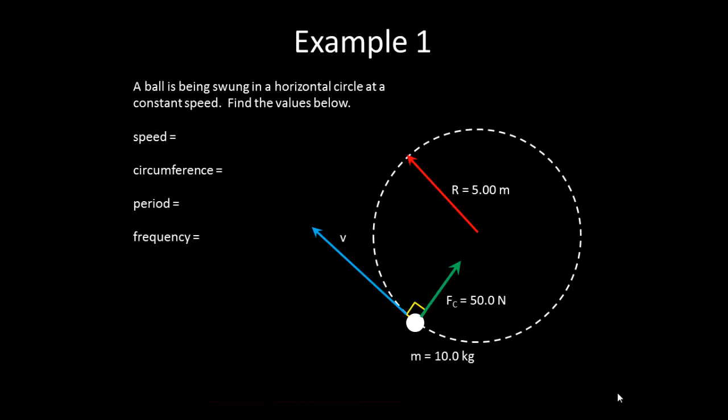I will now do two example problems. The first is a simple situation where a ball is being swung in a horizontal circle at a constant speed. Find the values below. Let's begin by finding the speed. This net force is going to be equal to mv² over r. We know that the centripetal force, whatever it's being caused by, is equal to 50 newtons. Our mass is 10 and our radius is 5. We can solve for the speed and we get that the speed is 5.0 meters per second.